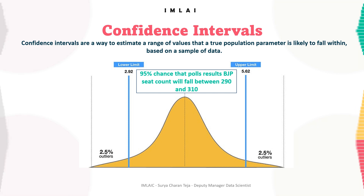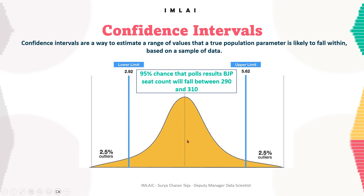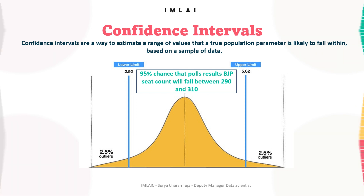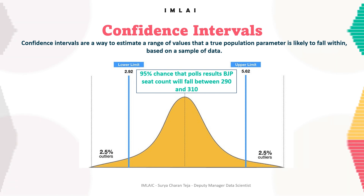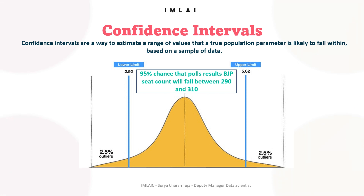Confidence intervals are a way to estimate a range of values that a true population parameter is likely to fall within, based on a sample of data. Imagine you are trying to estimate the average height of all people in a country, but it's not feasible to measure everyone's height. Instead, you take a random sample of people and measure their heights. The average height of this sample will likely differ from the true average height of the entire population. To estimate the range of values that the true average height might fall within, you can calculate the confidence interval.